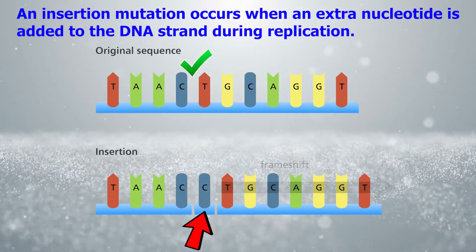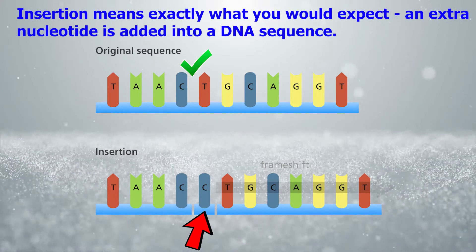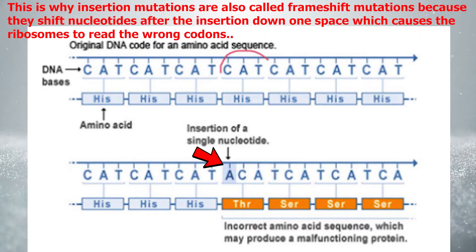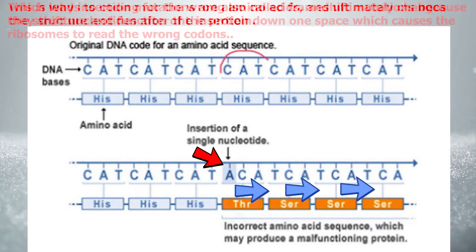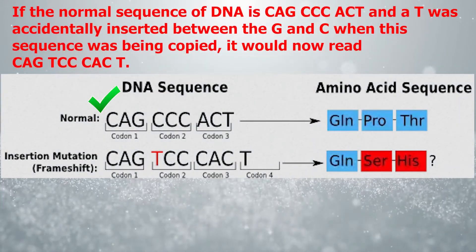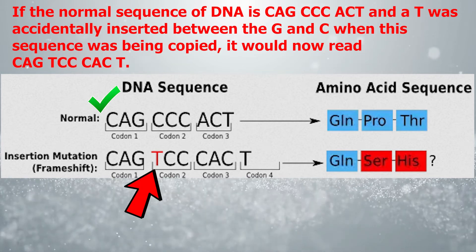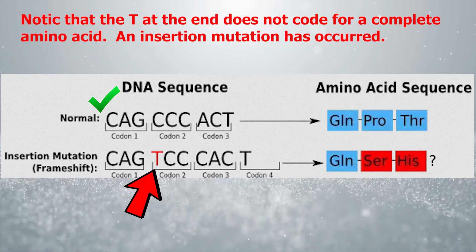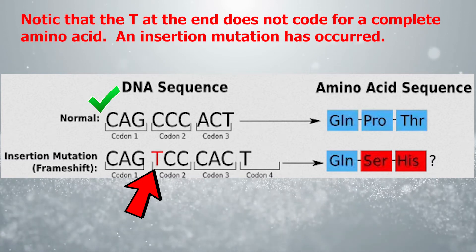Now let's take a look at insertion mutations. An insertion mutation can occur when an extra nucleotide is added to the DNA strand during replication. Insertion means exactly what you would expect — an extra nucleotide is added into a DNA sequence. Because DNA sequences are grouped into chunks of three called codons, inserting an extra nucleotide can throw everything off. This is why insertion mutations are also called frameshift mutations, because they shift nucleotides after the insertion down one space, causing the ribosomes to read the wrong codons, leading to the wrong amino acids and ultimately changing the structure and function of the protein. For example, if the normal sequence of DNA is CAG, CCC, ACT and a T was accidentally inserted between the G and C, it will now read CAG, TCC, CACT. Notice that the T at the end does not code for a complete amino acid — an insertion mutation has occurred.